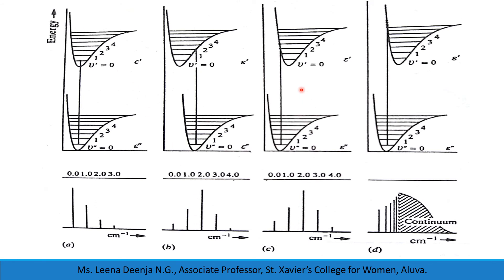In figure C, we can see that the upper electronic energy level's equilibrium internuclear distance is slightly greater than that of the lower electronic energy level. So, if initially the molecule is in V double-dash equal to 0, during the electronic transition it will reach the V dash equal to 2 level. The 2,0 transition intensity will be maximum. For the other transitions — 1,0 and 0,0 — their intensities will be gradually decreasing.